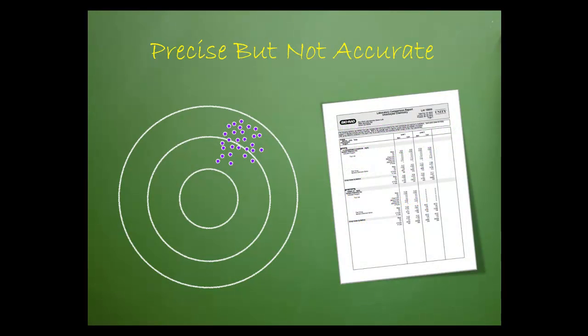A peer group comparison will quickly detect deficiencies in accuracy. If the group is recovering a value dramatically different than your own, your value must be considered incorrect, regardless of your repeated precision.